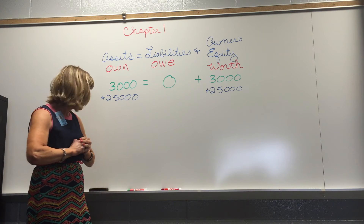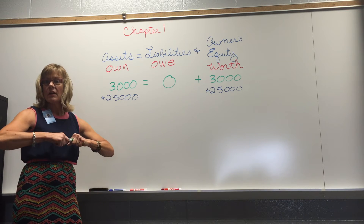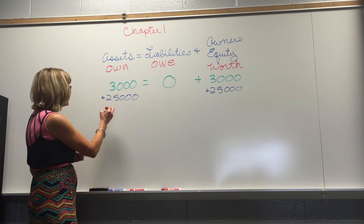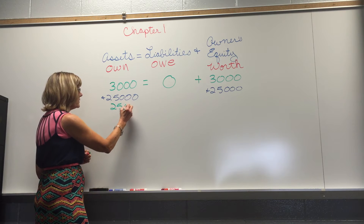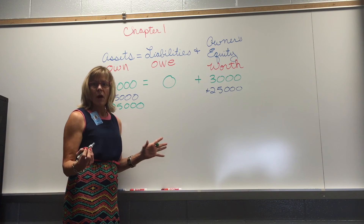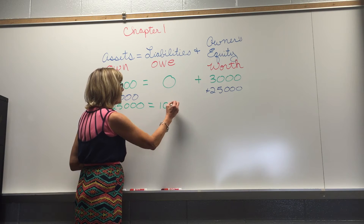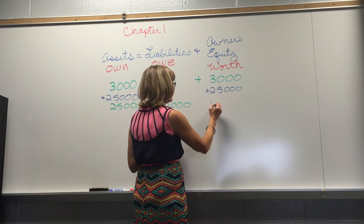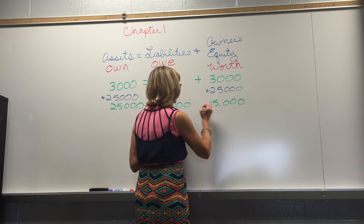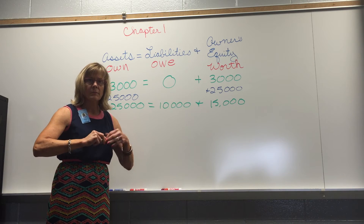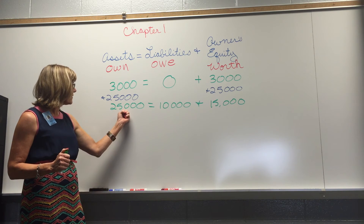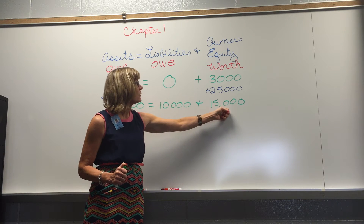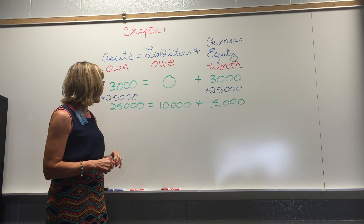There are other ways we could do that. Maybe we decide to take out a loan to buy the van. Let's say we purchased the $25,000 van and borrowed $10,000 to do it, paying the rest in cash. We have a $25,000 van, we owe $10,000 on it, and $15,000 is the worth of our business after that particular transaction.